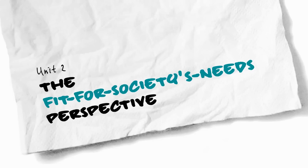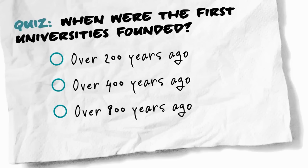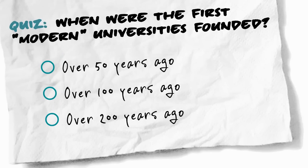What does society actually need? Another quiz: when were the first universities founded? The University of Bologna, Cambridge, and Oxford were founded a pretty long time ago — around 800 years — to satisfy the needs of that society in those days.